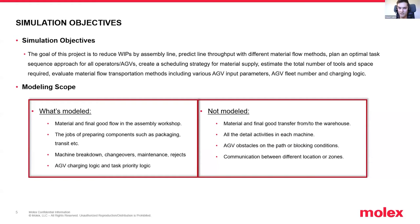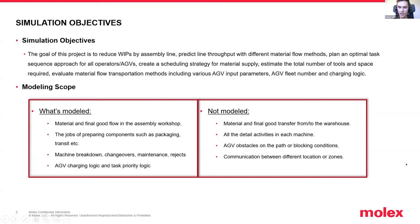The simulation objective was to reduce WIPs around the assembly line, predict throughput with different material flow methods, plan an optimal task sequence approach for all operators or AGVs, create a better scheduling strategy for material supply, and estimate the total number of tools and space required to satisfy the schedule. Regarding AGVs specifically, we put a lot of time optimizing things like charging logic because with different vendors, there are always different parameters - such as charging time, the time when an AGV can go to charge, and minimum charging time.